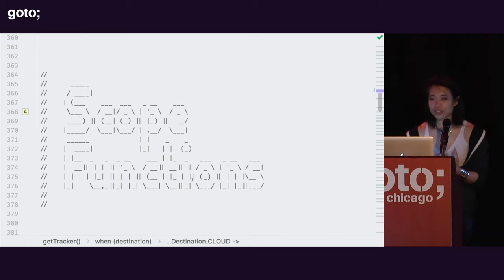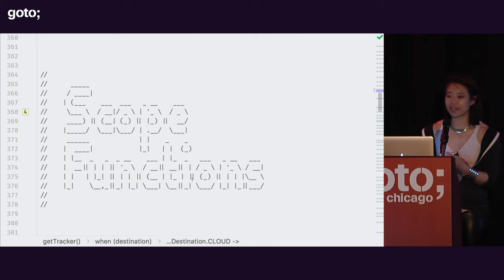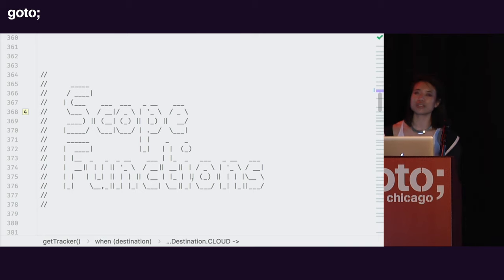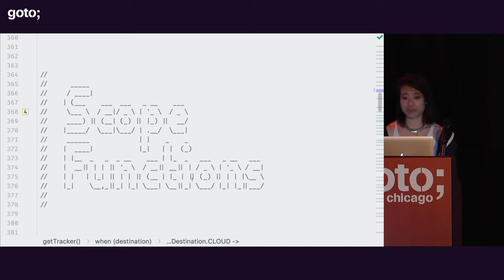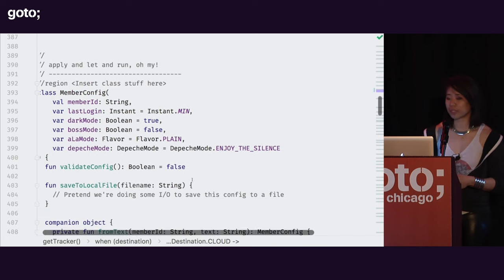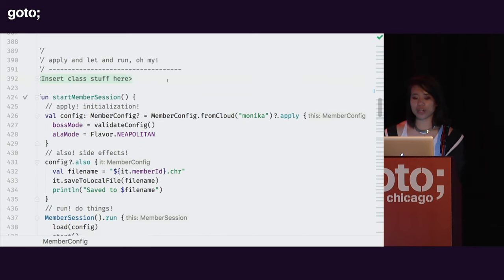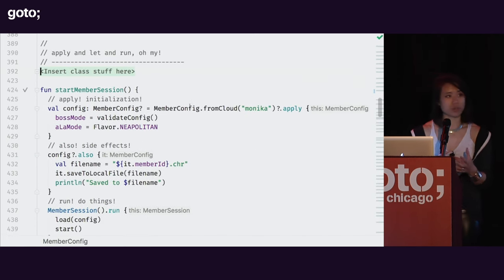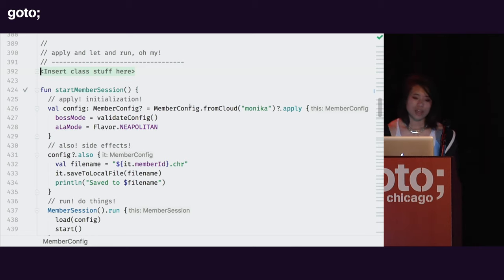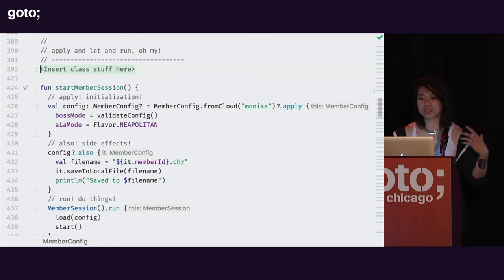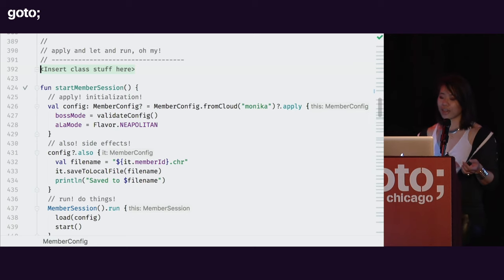There are a set of really cool higher-order functions in the standard lib that I've heard referred to as standard extensions, but I believe newer learning material from JetBrains refers to them as scope functions. As their name suggests, they allow you to play with scope and group your code logically. If you've been using Kotlin for some time, these are basically the functions apply, let, run, and with.